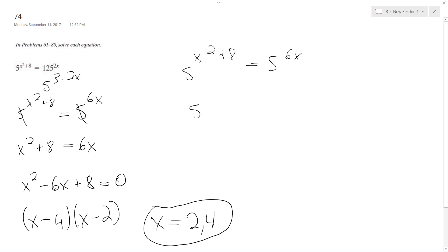Using 2, I get 5 raised to the 4 plus 8 is equal to 5 raised to the 6 times 2. So I get 5 raised to the 12 is equal to 5 raised to the 12. That checks out.